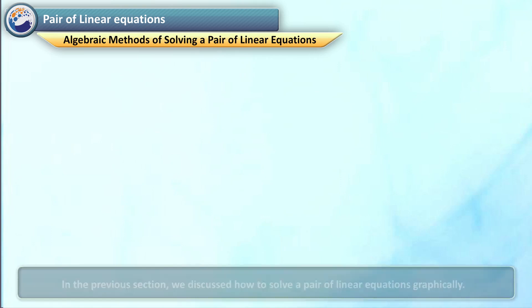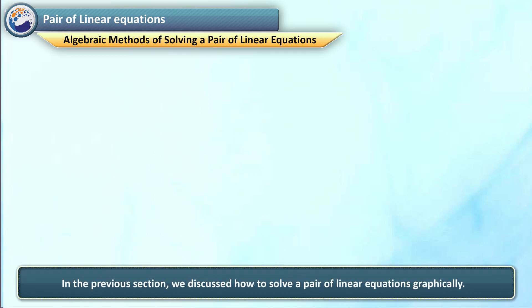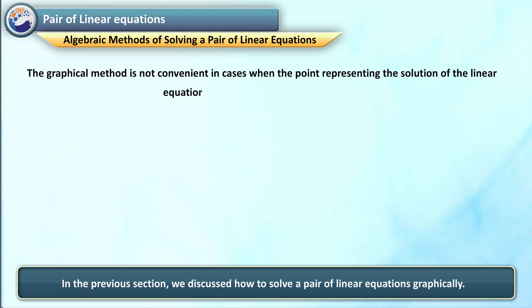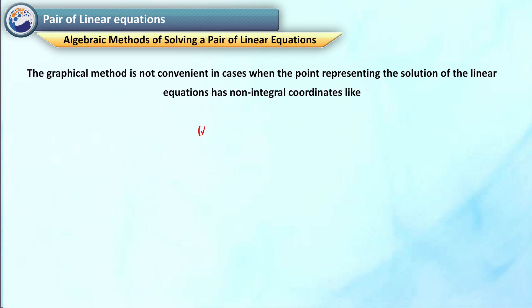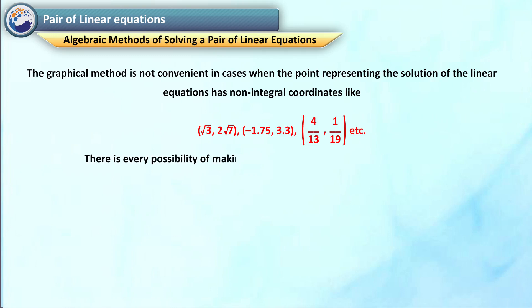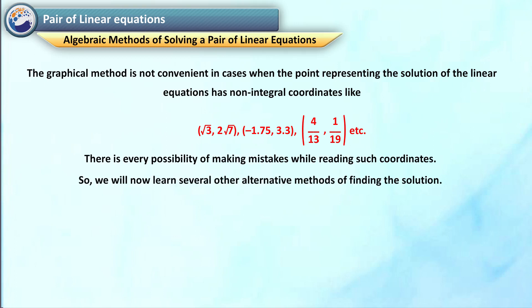Algebraic methods of solving a pair of linear equations. In the previous section, we discussed how to solve a pair of linear equations graphically. The graphical method is not convenient in cases when the point representing the solution has non-integral coordinates like root 3 and root 2, 7, minus 1.75 and 3.3, or 4 by 13 and 1 by 19, etc. There is every possibility of making mistakes while reading such coordinates. So we will now learn several other alternative methods of finding the solution.